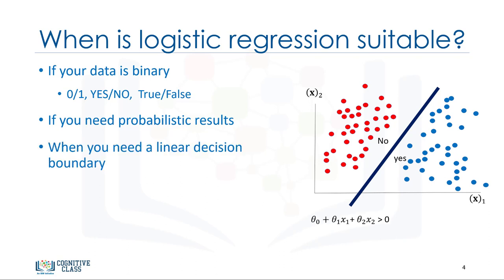Third, if your data is linearly separable. The decision boundary of logistic regression is a line, or a plane, or a hyperplane. A classifier will classify all the points on one side of the decision boundary as belonging to one class, and all those on the other side as belonging to the other class. For example, if we have just two features and are not applying any polynomial processing, we can obtain an inequality like theta 0 plus theta 1 x1 plus theta 2 x2 is greater than 0, which is a half plane, easily plottable. Please note that in using logistic regression, we can also achieve a complex decision boundary using polynomial processing as well, which is out of scope here.